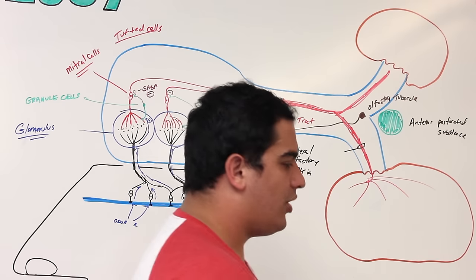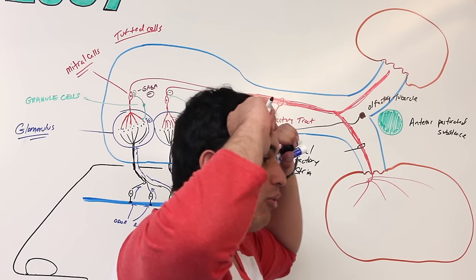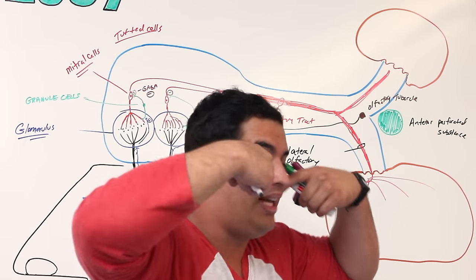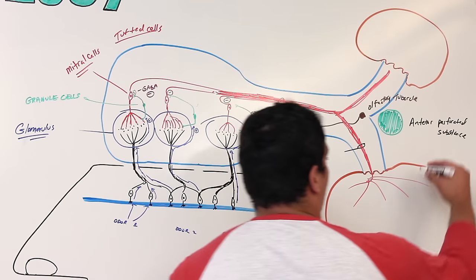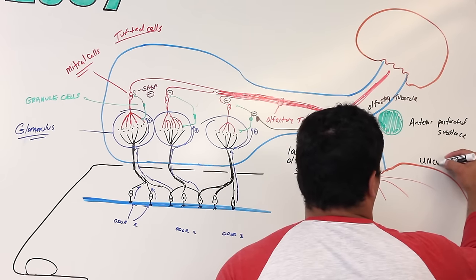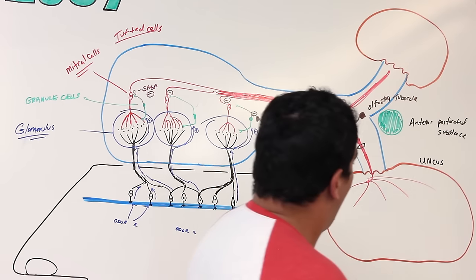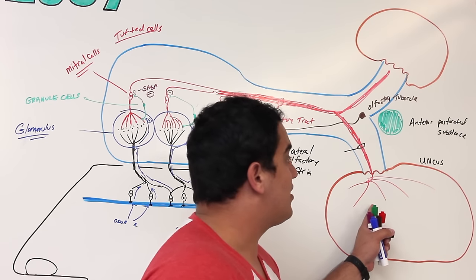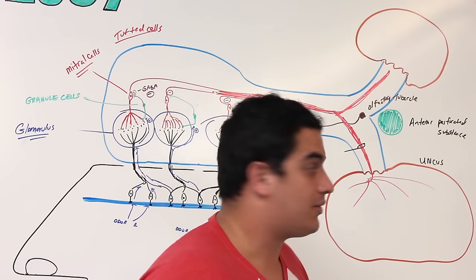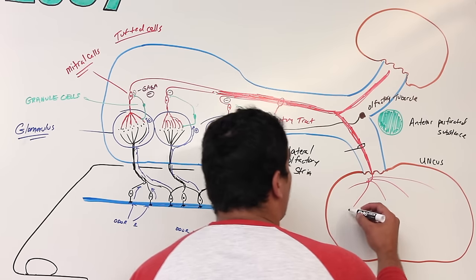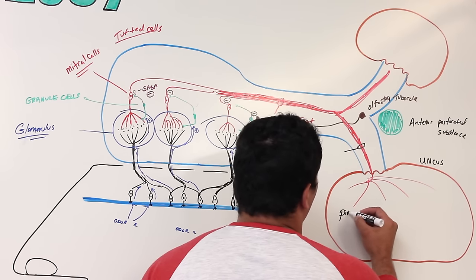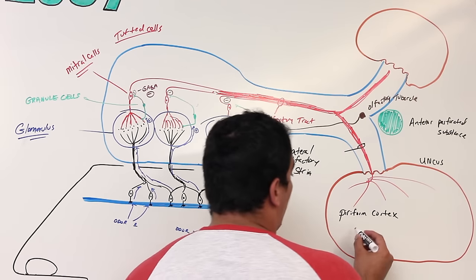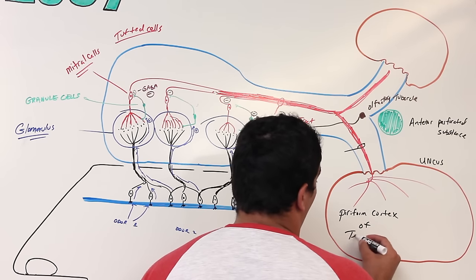The lateral olfactory striae brings these fibers into a specific part of the central nervous system. You have frontal lobes, parietal lobes, and temporal lobes. In the really deep part of the temporal lobe, in the medial aspect, you have a structure called the uncus. This lateral olfactory striae supplies many different structures around the uncus, including the uncus itself and the piriform cortex of the temporal lobe.